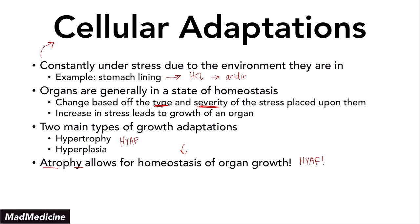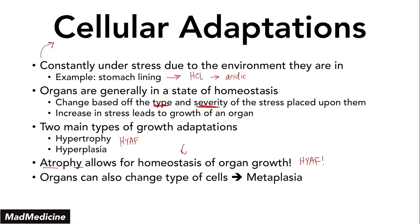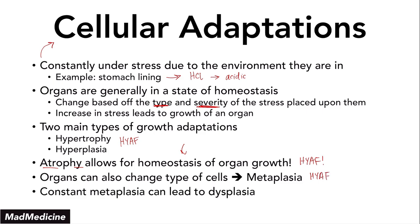Another way our organs can adapt to stress is by changing the type of cells they have, and this is called metaplasia — also a very high yield subject you need to remember. Constant metaplasia, if left unchecked, can lead to dysplasia, a topic we've also already discussed. And if dysplasia is left untreated, this will go on to carcinoma, or cancer. This is essentially one of the main pathways of carcinoma you need to know.